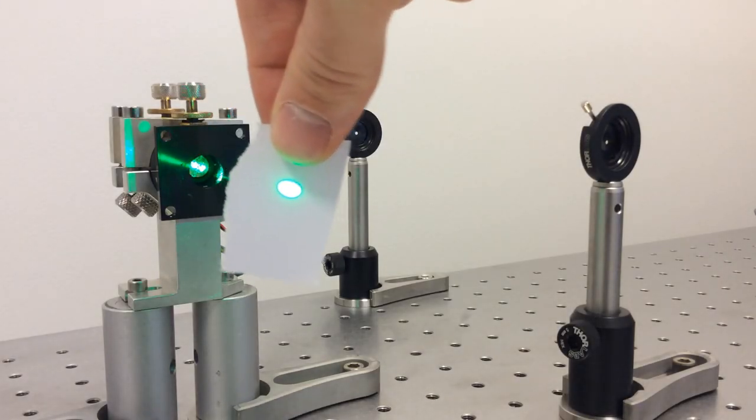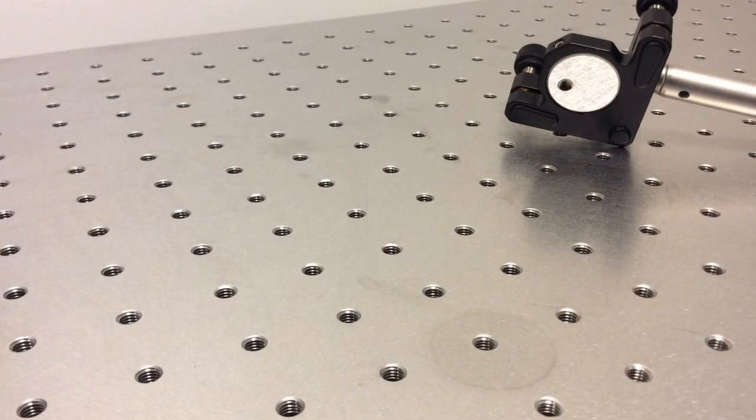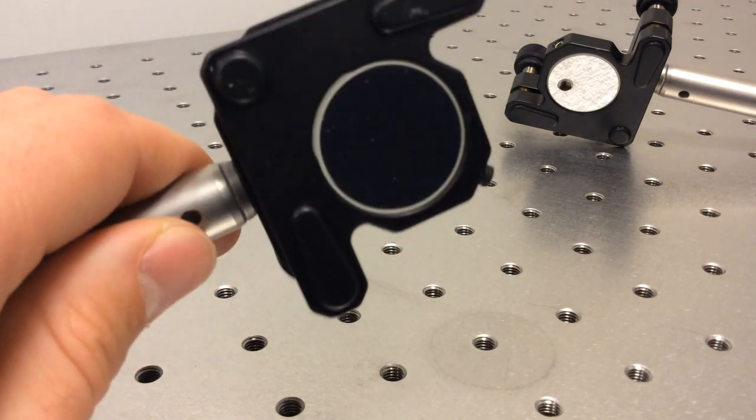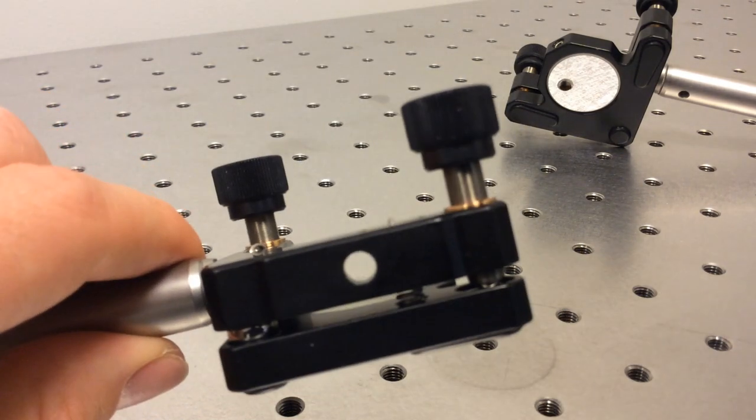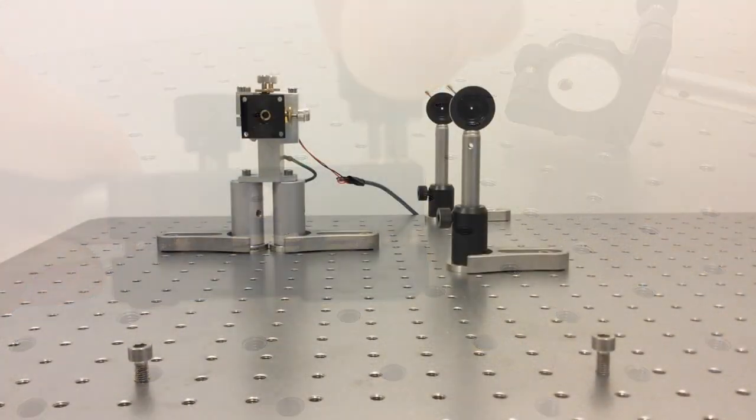Let's steer this beam here through the two pinholes on the right. Place two mirrors in kinematic mounts and make sure that the adjusters are in the middle of the range. Use the grid of holes as a guideline. That really helps.